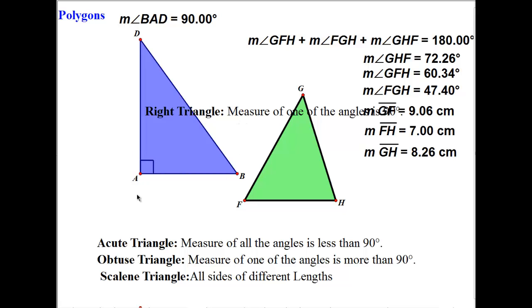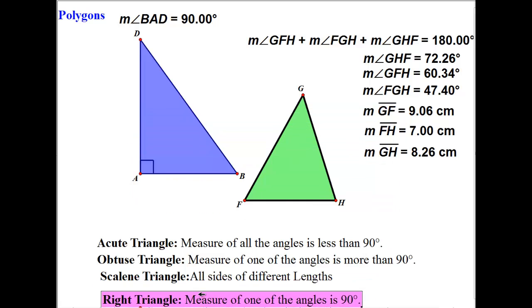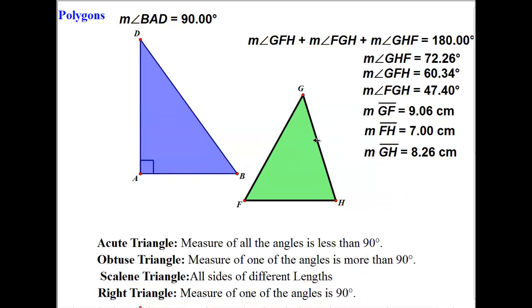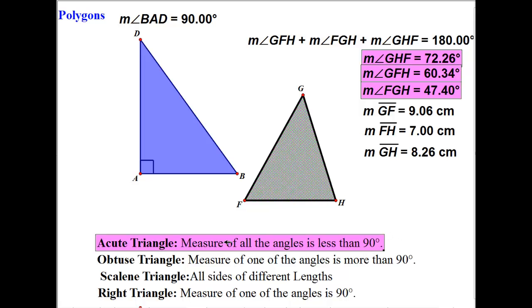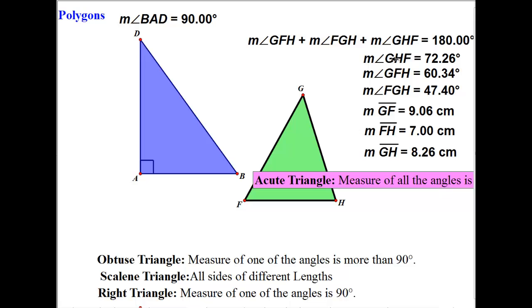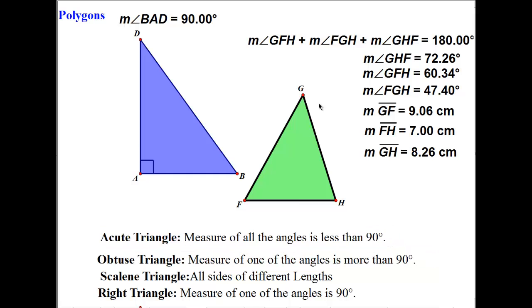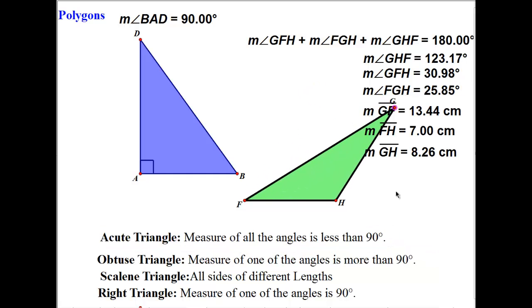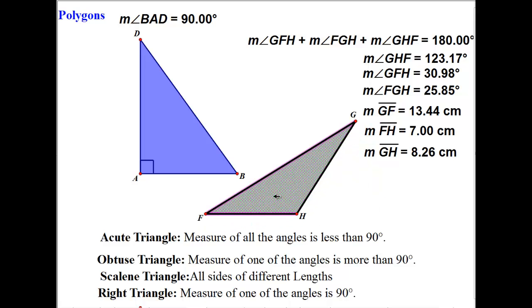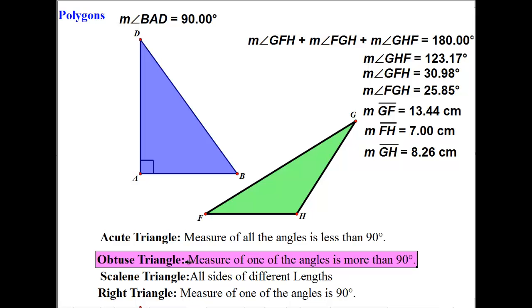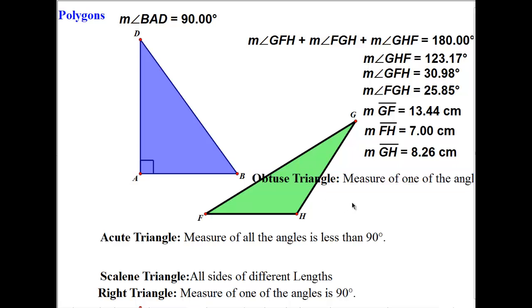Whenever you see the square symbol in a triangle, that means that angle is 90 degrees and it's a right triangle. If all angles in the triangle are less than 90 degrees, the triangle is called an acute triangle. An obtuse triangle is one in which one of the angles is above 90 degrees. For example, this triangle is obtuse because one angle is 123.17 degrees.